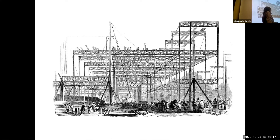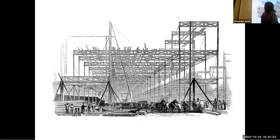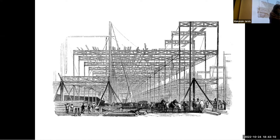Our link with the biosphere — which was the main source of resources in organic society — was extended to the lithosphere, where we found new materials and resources. This enabled the new architecture of the time and determines the architecture of our era. We have new materials like steel and cement, both requiring high-temperature processing. Then came aluminum and plastics, and during the 20th century architects experimented with these materials to define their uses and possibilities.